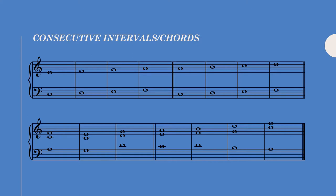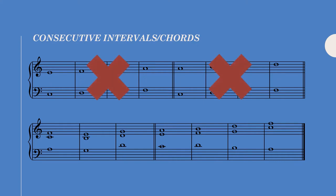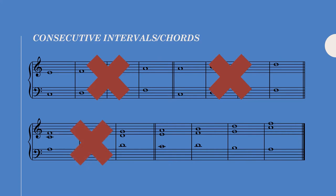We cannot have more than three consecutive imperfect intervals in a row. Here we have four thirds in a row, and in the next example, four sixths in a row. This isn't allowed because we start to lose the independence of voices. Similarly, we can't have three or more first inversion chords in a row where all voices move in parallel motion. However, we can have more than three first inversion chords consecutively if at least two or more of the voices move in contrary motion against one other voice. Here we have four first inversion chords in a row, but the last three all have the upper two voices moving in contrary motion against the bass, so it's fine.